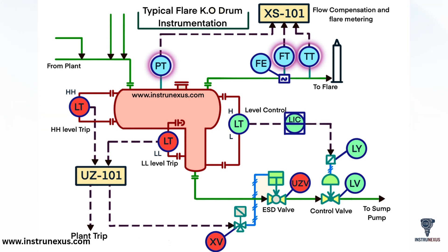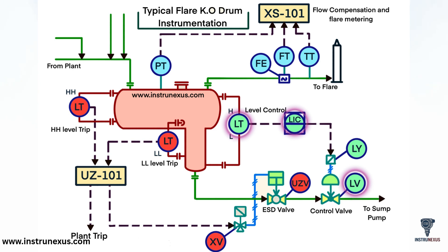For level control, the drum has level transmitters (LT) that continuously sense the liquid level. Their signal goes to the level indicating controller (LIC), which adjusts the control valve (LV) through the positioner (LY) to maintain the liquid within the desired range. The drained liquid flows onward to the sump pump.